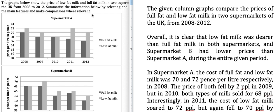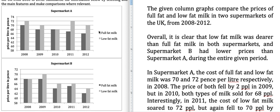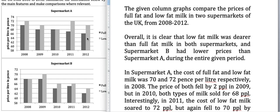You can see there are two graphs — Supermarket A and Supermarket B. Both graphs have price per liter in pence on the y-axis. The lighter column represents low-fat milk and the darker one represents full-fat milk.